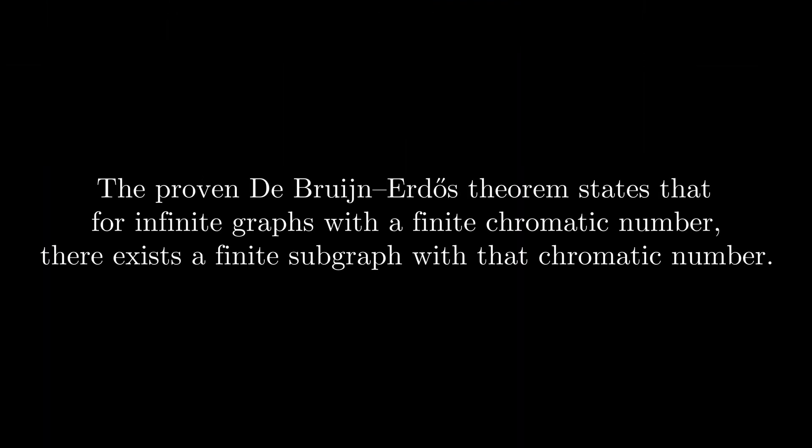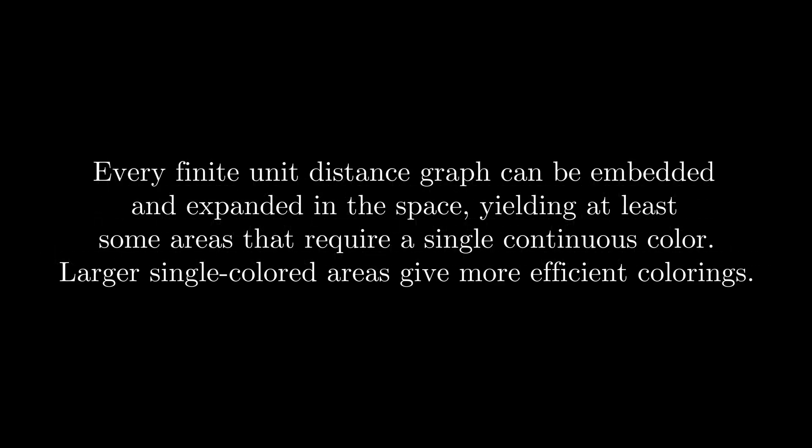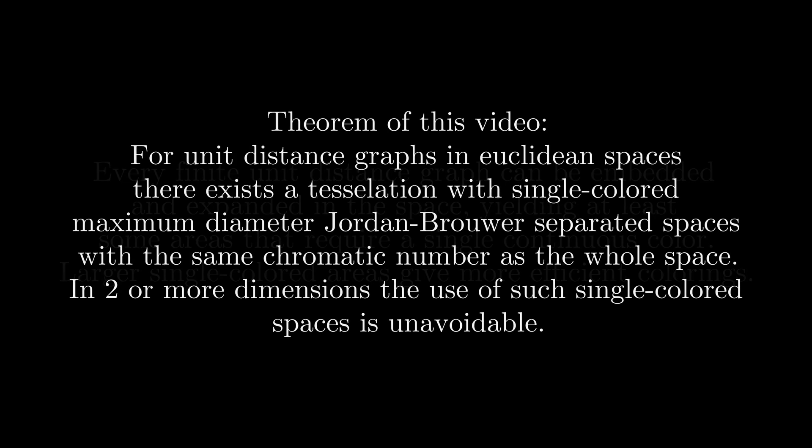The proven de Bruijn-Erdős theorem states that for infinite graphs with a finite chromatic number, there exists a finite subgraph with that chromatic number — and this is the last piece we need. Every finite unit distance graph can be embedded and expanded in the space, yielding at least some areas that require a single continuous color. Larger single-colored areas give more efficient colorings. For unit distance graphs in Euclidean spaces, there exists a tessellation with single-colored maximum-diameter Jordan-Brauer separated spaces with the same chromatic number as the whole space. In two or more dimensions, the use of such single-colored spaces is unavoidable.